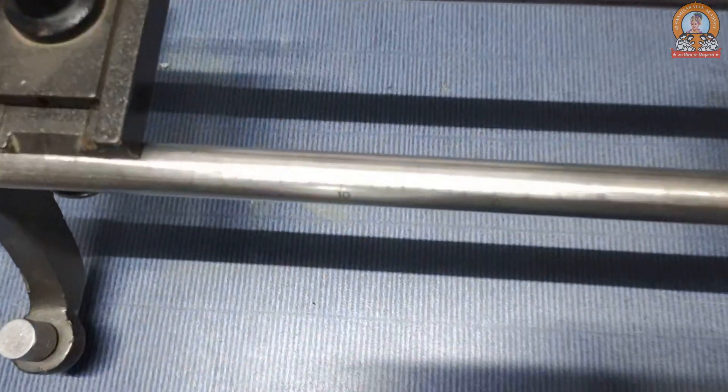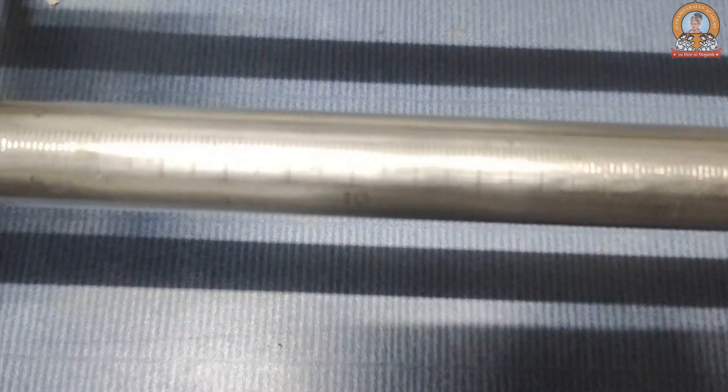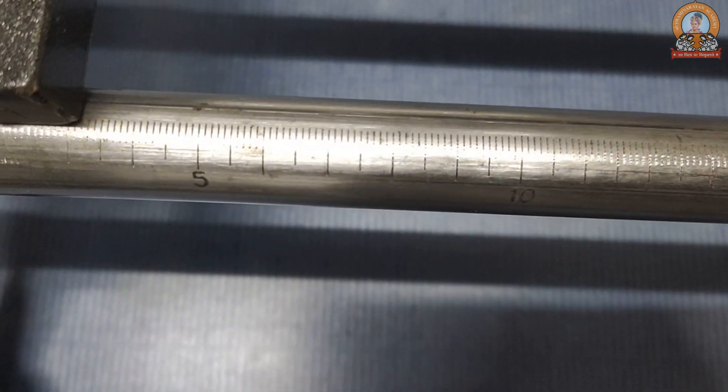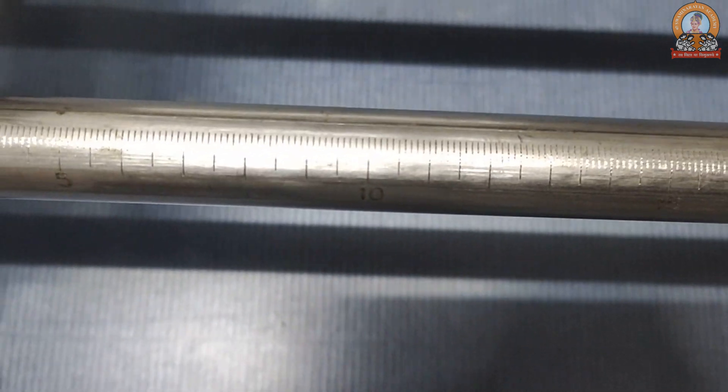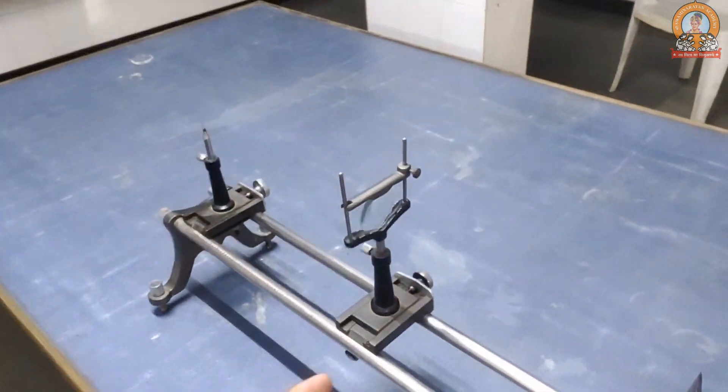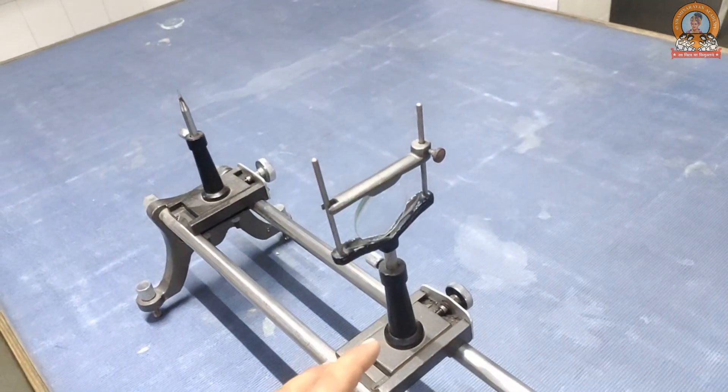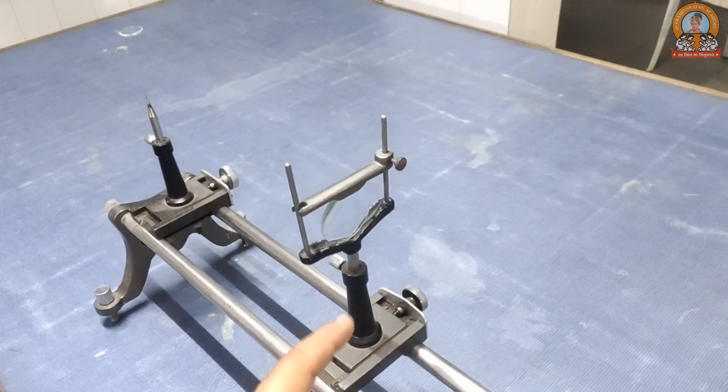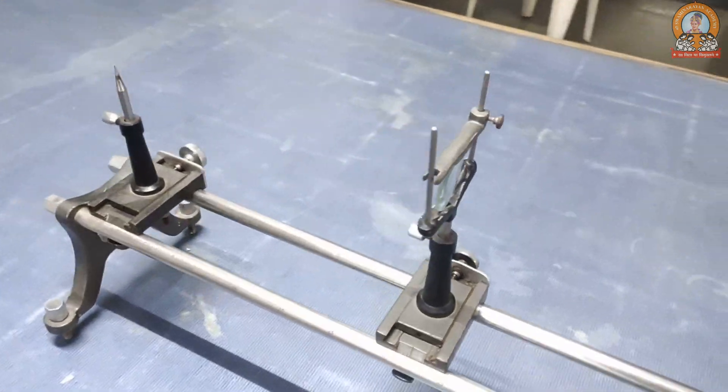As we all know, its least count is one millimeter. One count in the scale shows you one millimeter. So the first step is that you need to find the rough focal length of this lens, and you already know how to find it out. You have studied that in 11th standard.